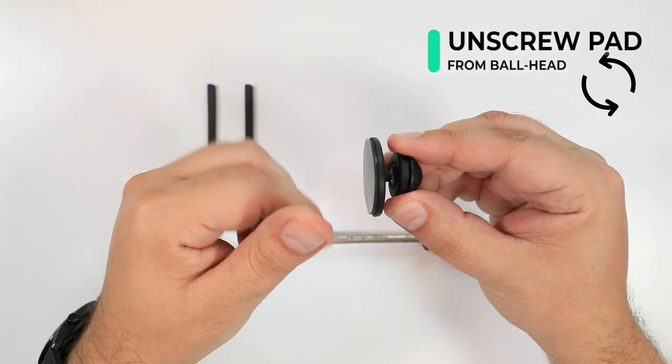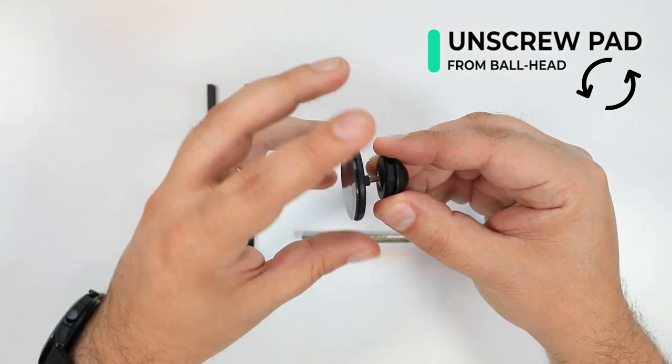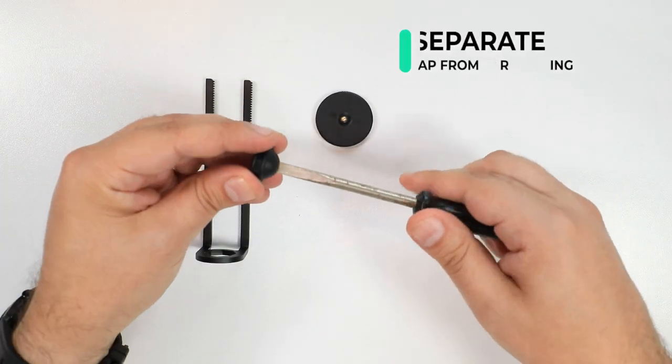Simply unscrew the pad from the ball head and then turn the screw cap counter clockwise to separate the two pieces.